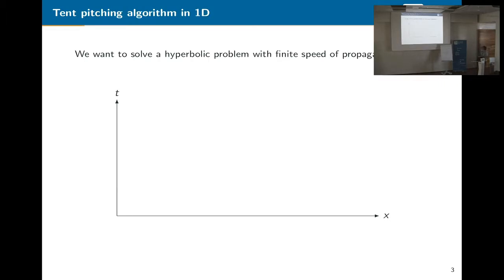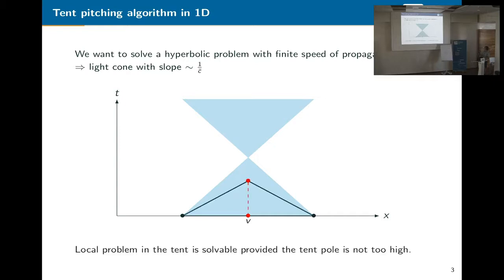So our problem setting is that we have a hyperbolic problem. We have finite speed of propagation, C bar. And the idea is if we have speed of propagation, we know if we stay inside this light cone, we are fine. We have all the information we need and we can create some tents. So if we have two elements and the central vertex sitting in the middle, then we can move this vertex up as far as long as we stay inside the light cone. So these local problems are solvable if we are low enough. If we move too far, then the local problems are not solvable anymore. So that's the only restriction we have.